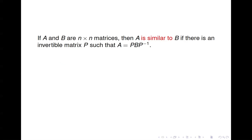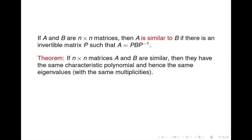Let's talk today about matrix diagonalization. First, we're going to introduce the concept of a similar matrix. If A and B are n by n matrices, then we say A is similar to B — and also B is similar to A — if there's an invertible matrix P such that A equals P B P inverse. We have this theorem: if two matrices are similar, they have the same characteristic polynomial, and hence the same eigenvalues with the same multiplicities. The characteristic polynomial is the determinant of A minus lambda I — that's the polynomial you get when finding eigenvalues.